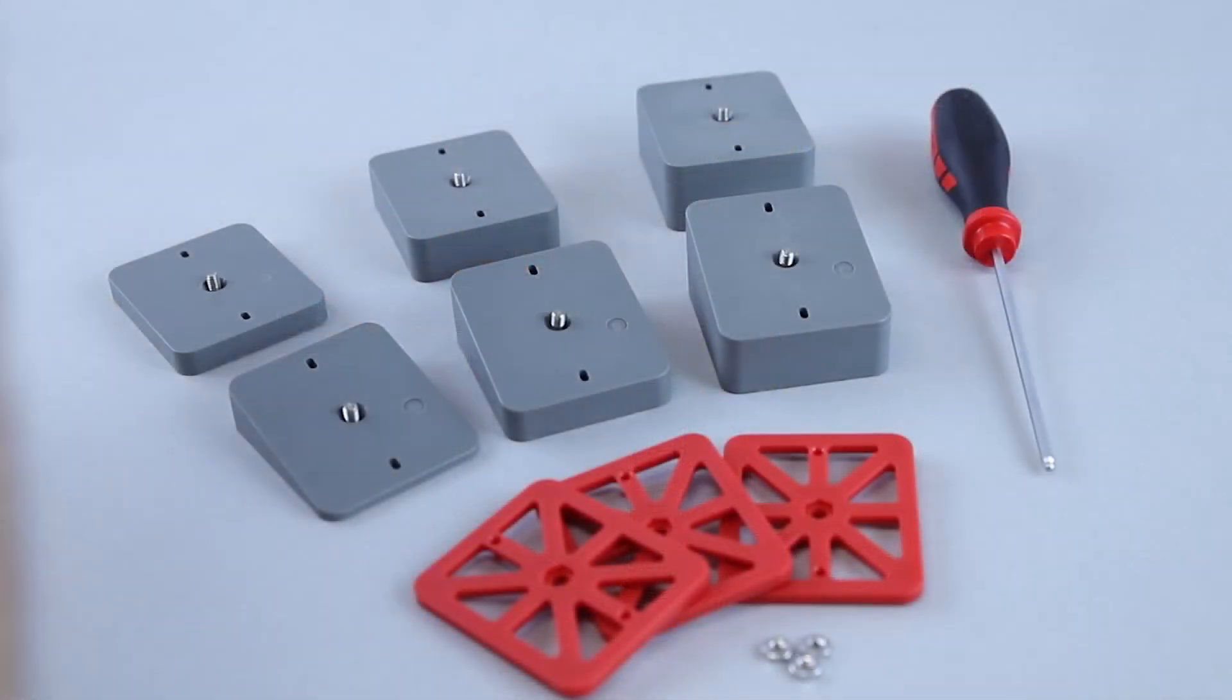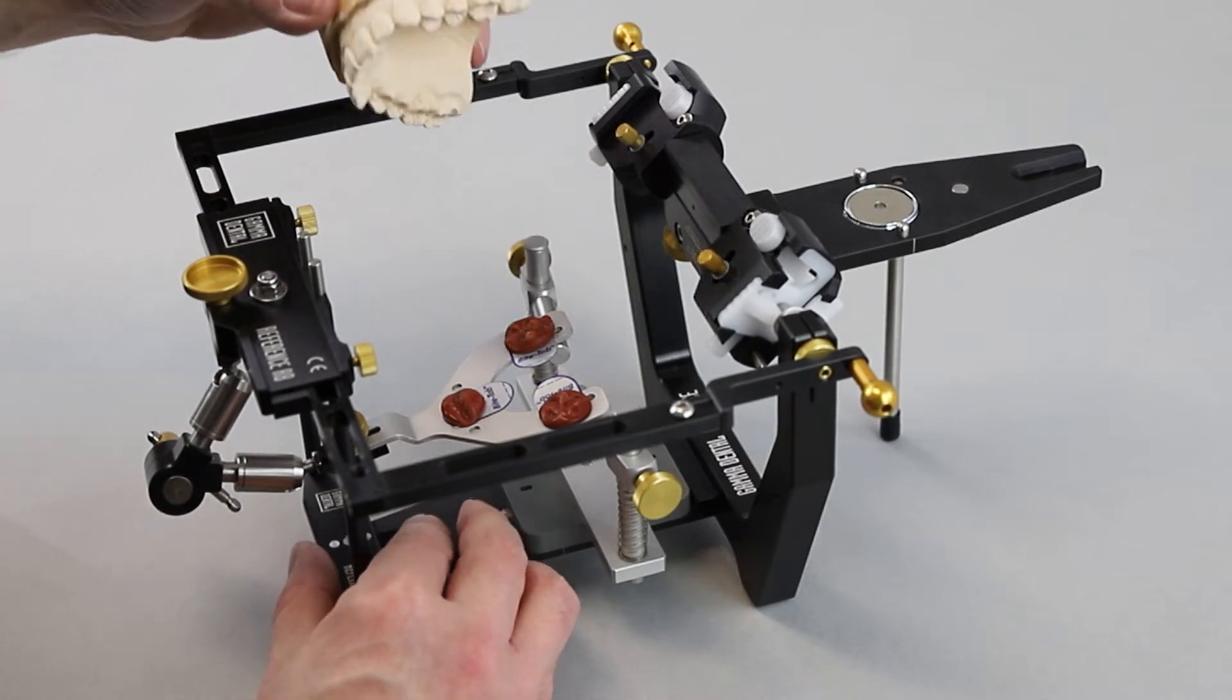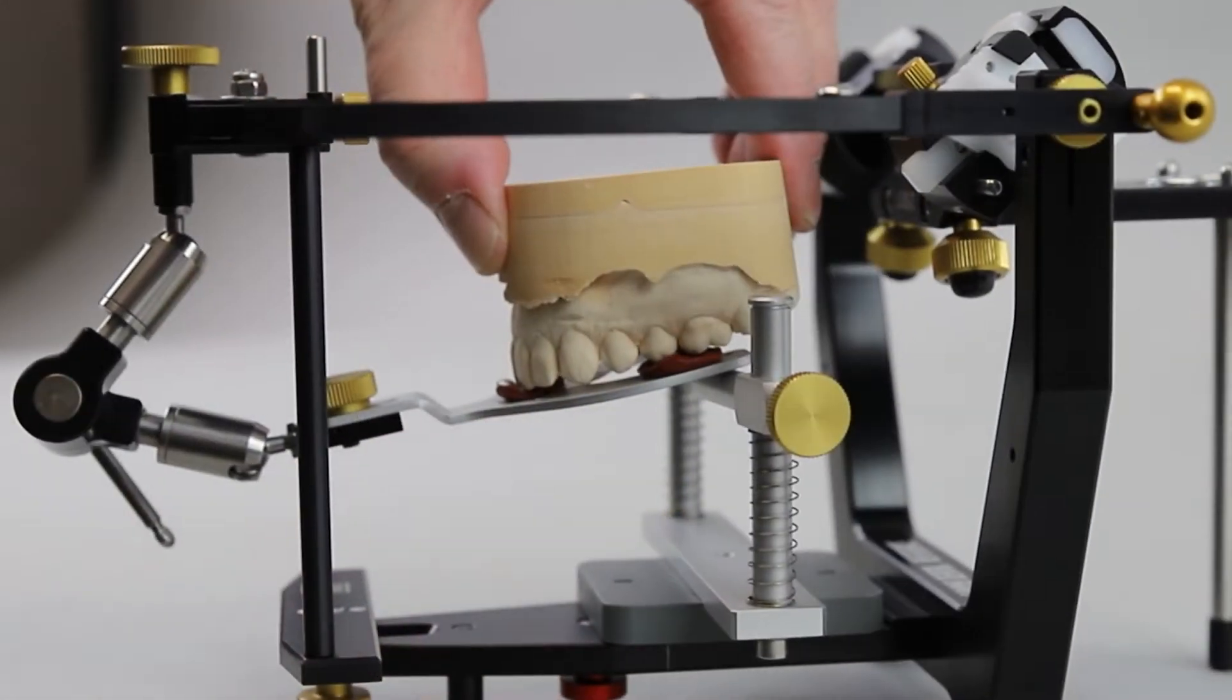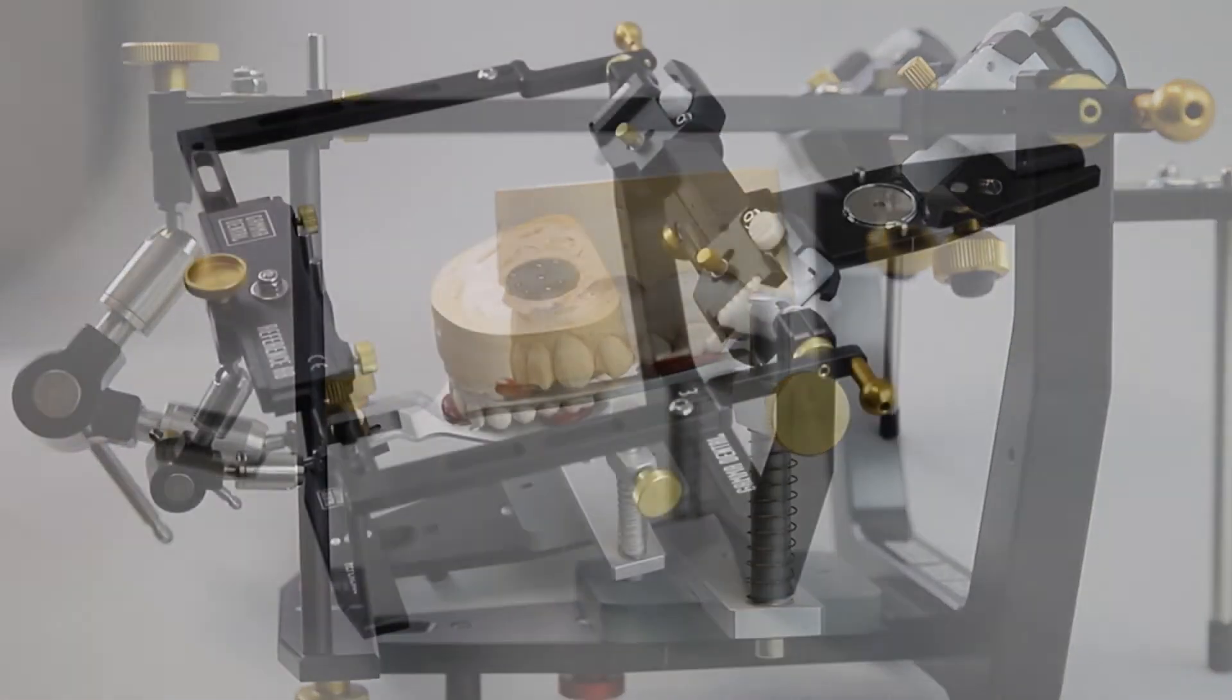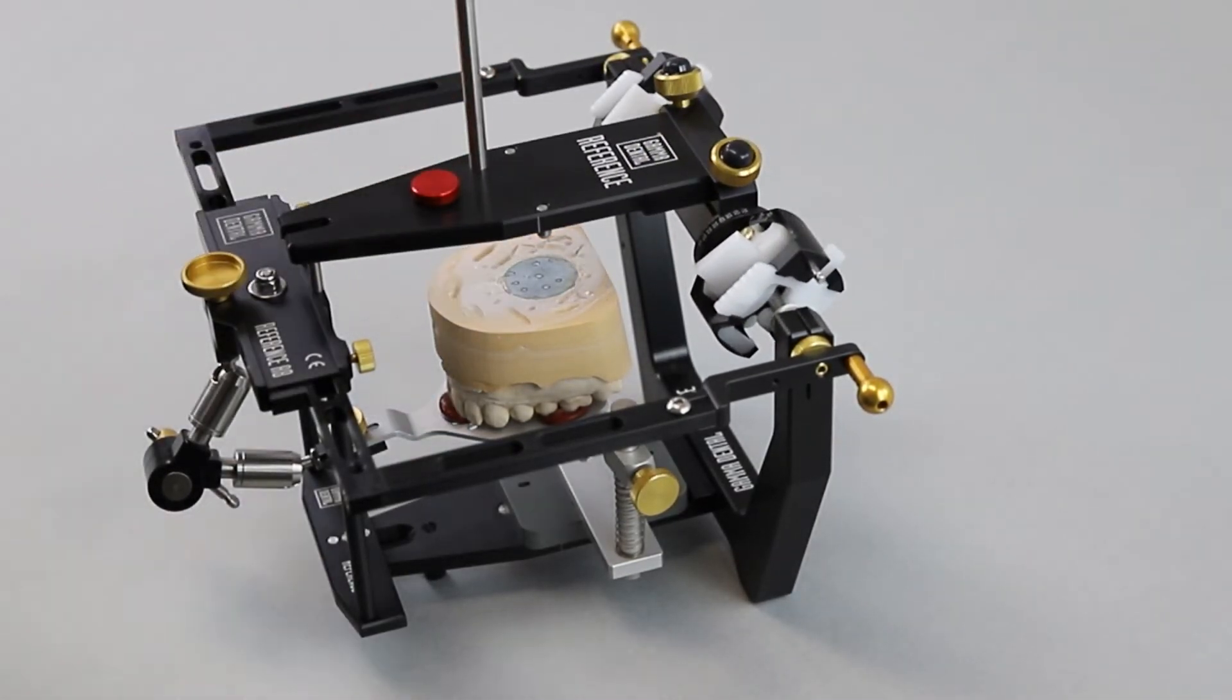The next step is to select the ideal distance block. First, the upper jaw model must be set into the corresponding impressions on the bite fork. Then close the upper section of the articulator so that it rests in solid contact on the anterior face bow pins.